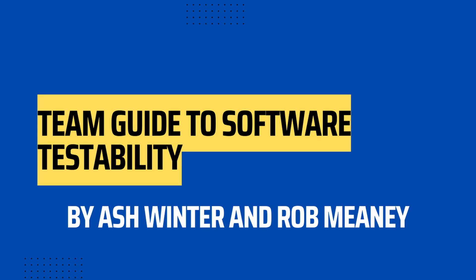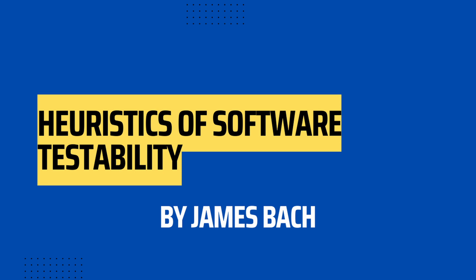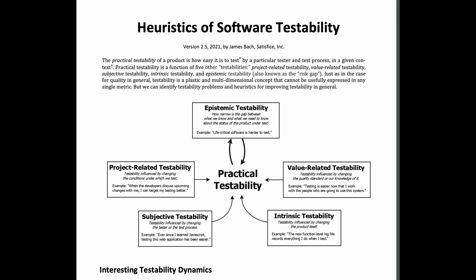Next we have Team Guide to Software Testability, a book by Ash Winter and Rob Meany. This is a bit more of a deep dive into software testability and how it affects the team. James Spark has an article called Heuristics of Software Testability, where he talks into what affects software testability in the project, such as project-related testability, intrinsic testability, and so on.